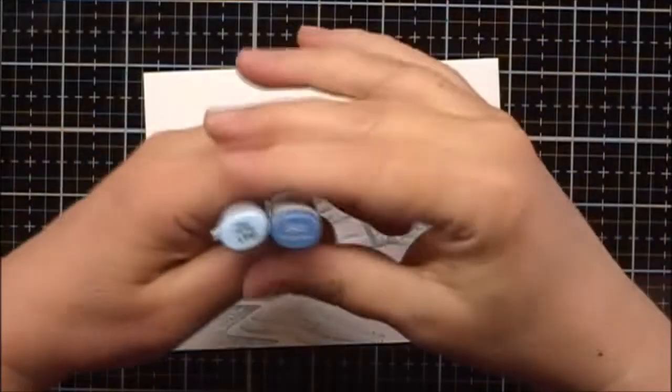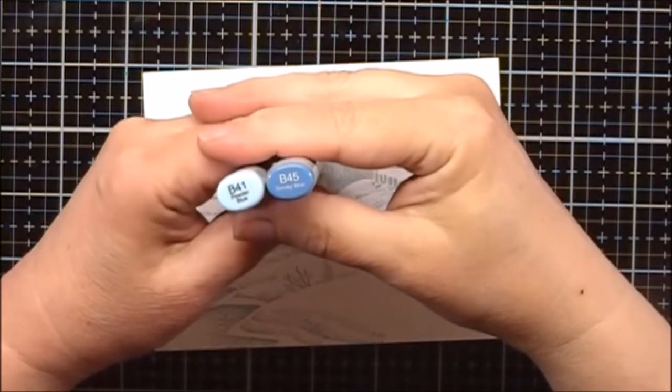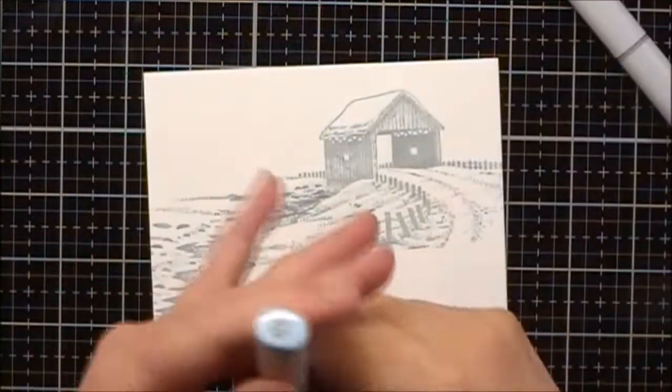And to color the water I'm going to use some Copic markers, alcohol-based markers, B41 and B45.